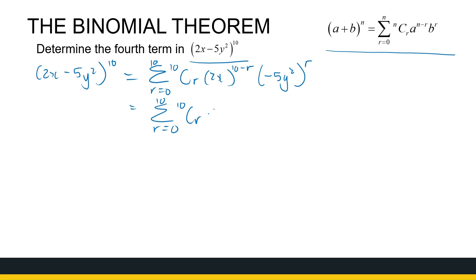My coefficient: 2 to the power (10 − r). I've got a minus 5 — you can use it as −5, or as −1 times 5, just don't forget about the minus — to the power r. Then for the x's, I've got x to the power (10 − r), and y to the power 2r.